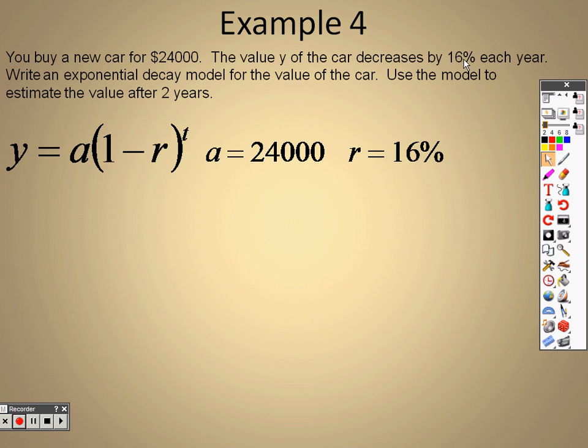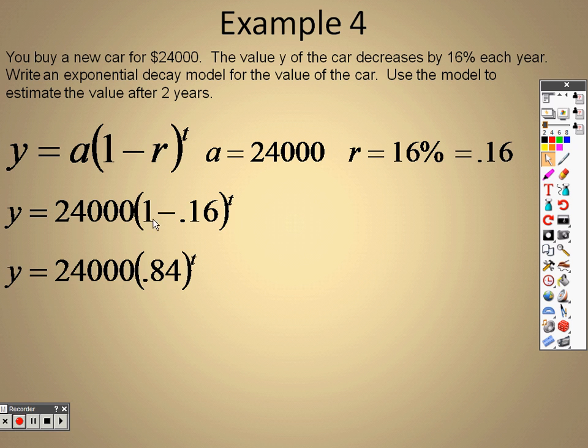$24,000 means I'm plugging that in for A. And R is 16% because that's your rate, but you need to write that as 0.16. So when I plug this all in, this is A, so 24,000 goes in for A, 0.16 goes in for the R, or the rate, and T is going to stand for time. So here's what I end up having. 1 minus 0.16 is 0.84. Still the 24,000 on the outside.